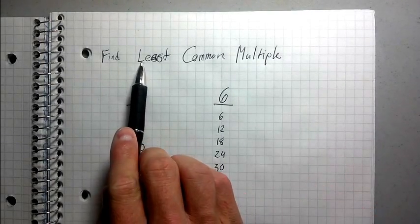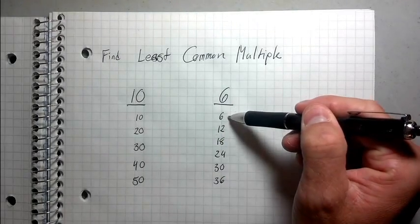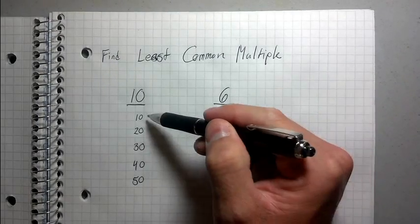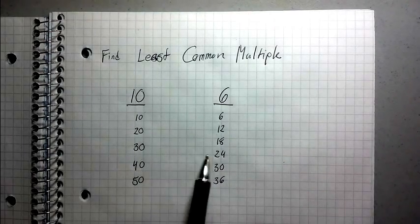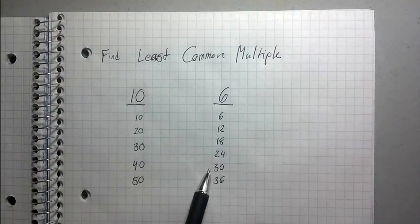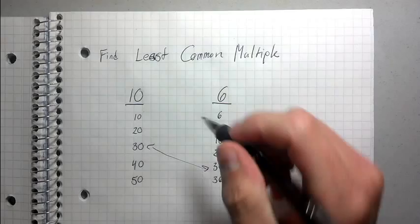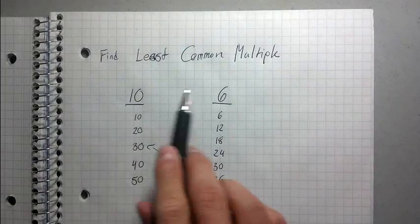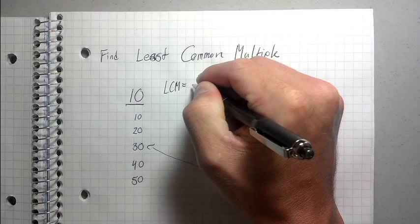Think about what the least common multiple is. It's the smallest shared multiple. Well, here are the multiples of 6. Here are the multiples of 10. What is the smallest number that both of these columns have in common? Well, in fact, it's 30. So I'm going to draw a line. So 30 is the least common multiple of 10 and 6. So I would just say that LCM equals 30.